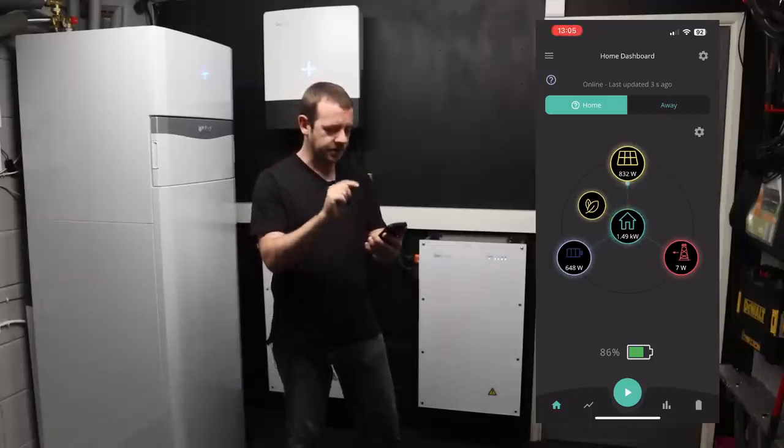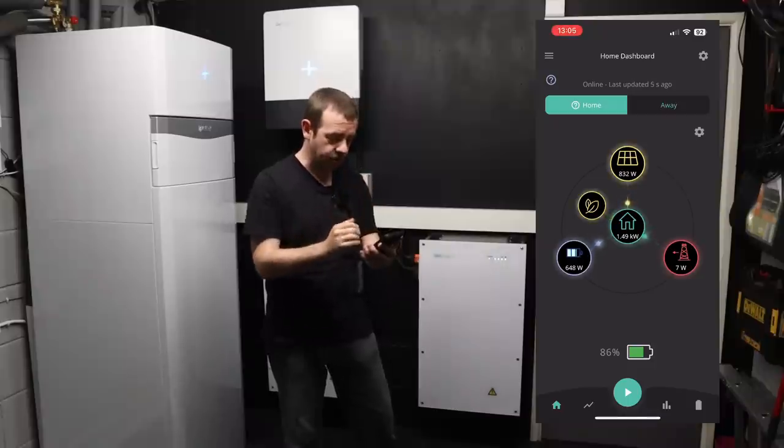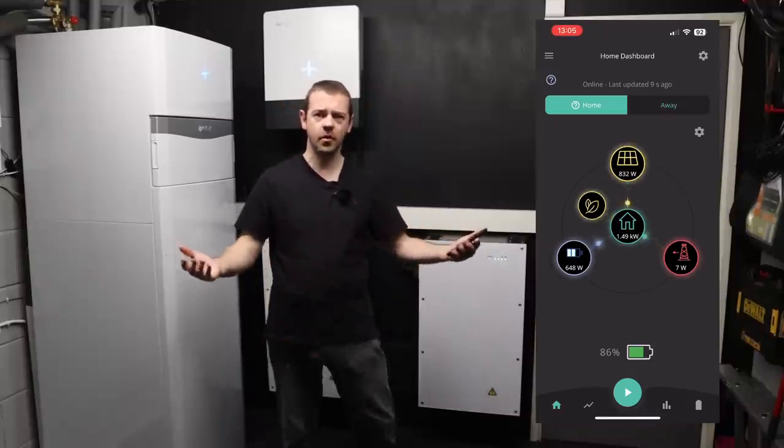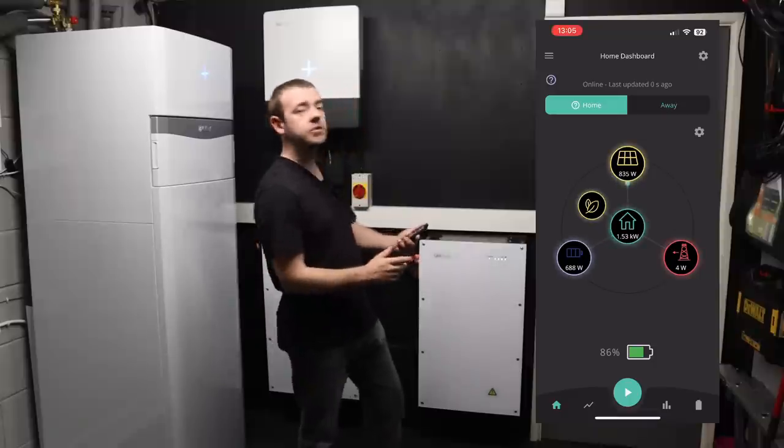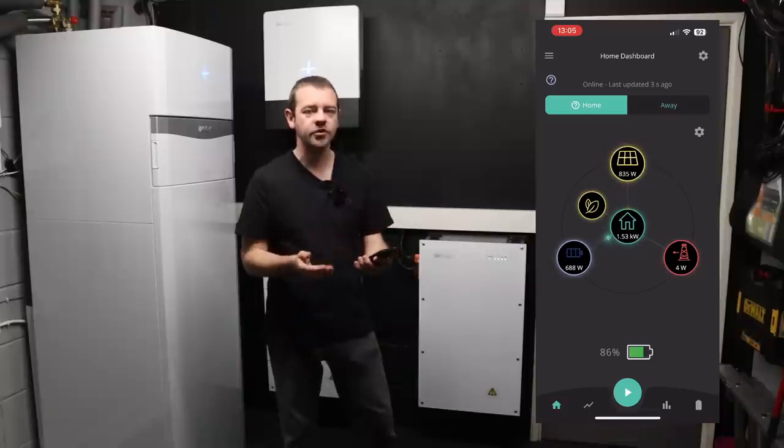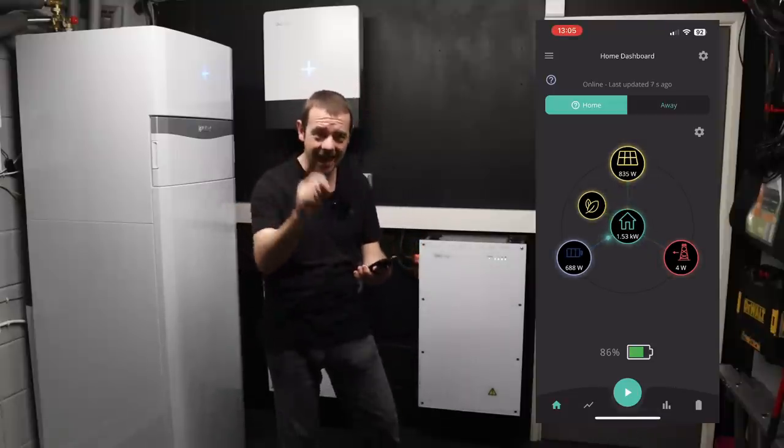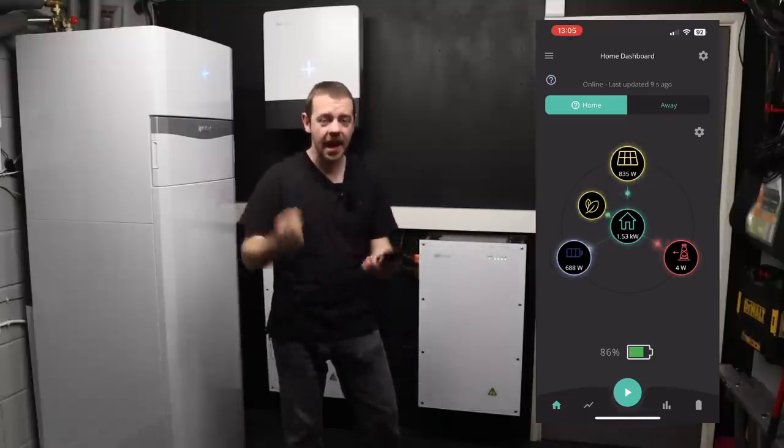You can see the solar panels, 832 watts going into the house. The battery is filling in the rest because for some reason the house is using 1.49 kilowatts—someone's clearly using something. And I know it says 4 watts coming from the grid, that's just a little bit of inertia. Ignore that, it's a tiny amount, it's normal.